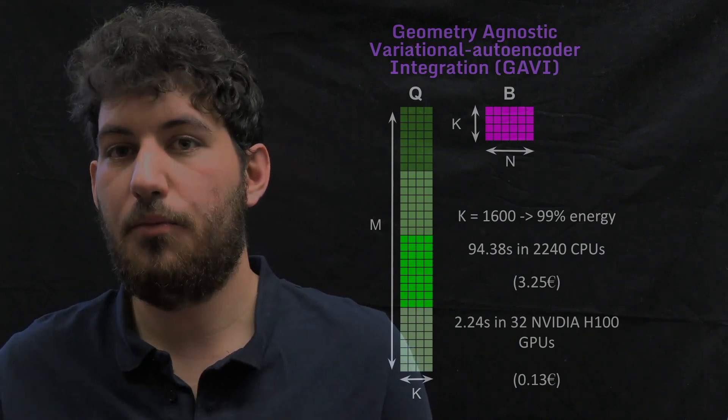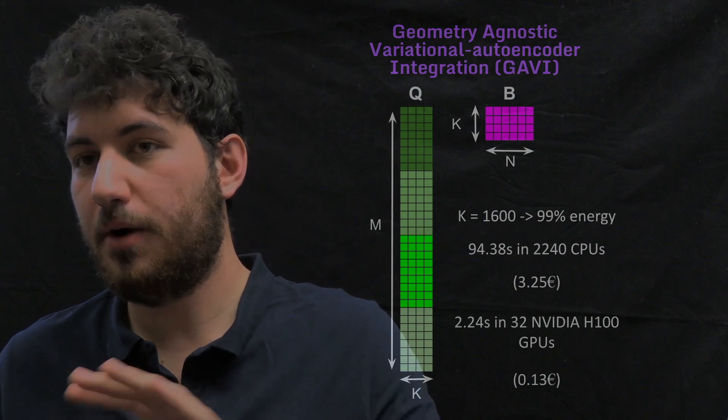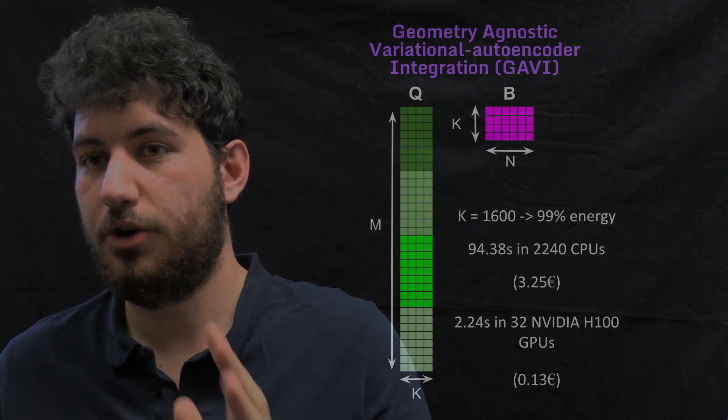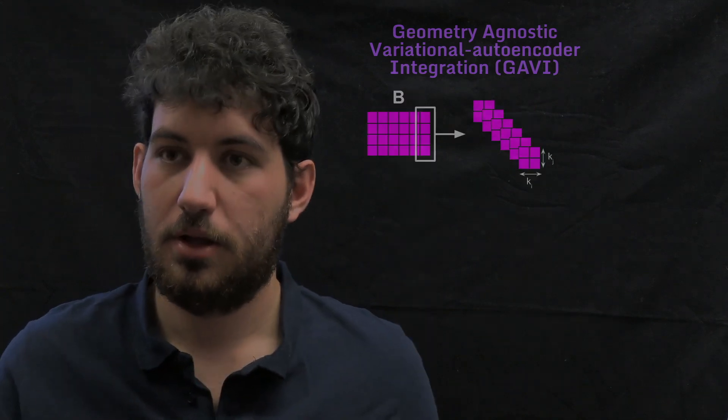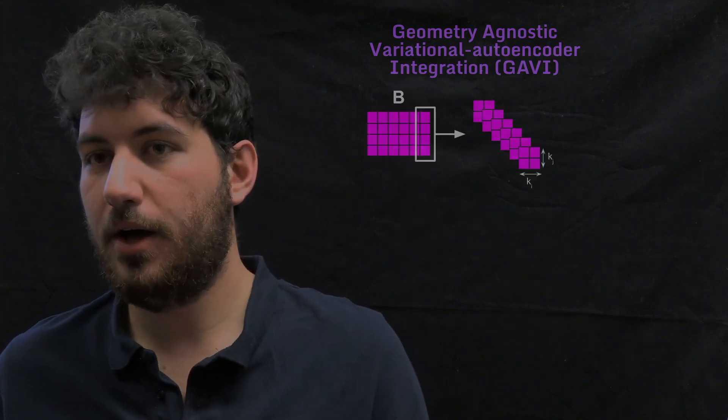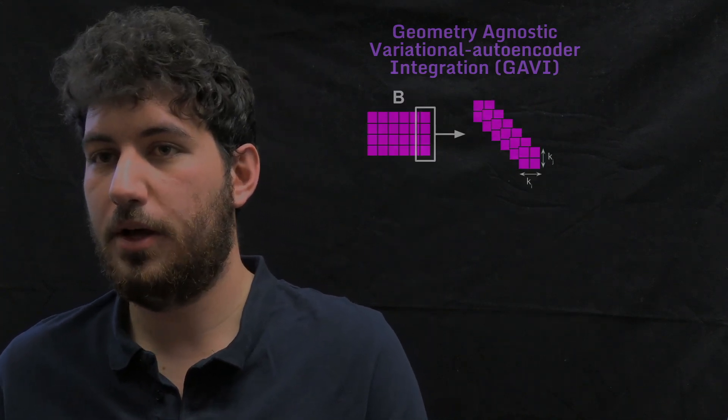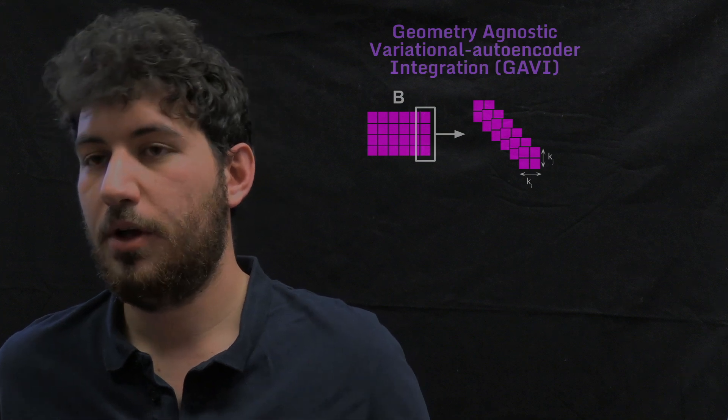So the next step, once we do that, we forget about the Q. We just store it for afterwards and we just focus on the B. Once we have the B, we get every column of the B and we treat it as a snapshot. To do that, we first reshape it in a square or as much square as possible image-like matrix.